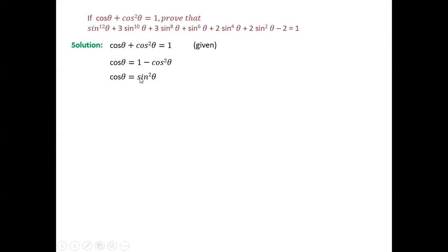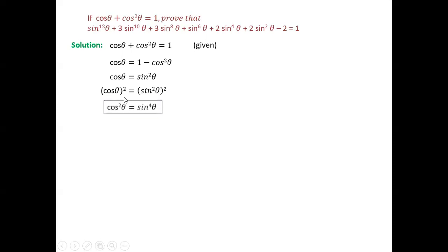We want the expression in terms of sin raised to 12, sin raised to 10, sin raised to 8, so let us try to get a relation between them. Let us square both sides of cos θ = sin²θ. When you square it, cos²θ = sin⁴θ.